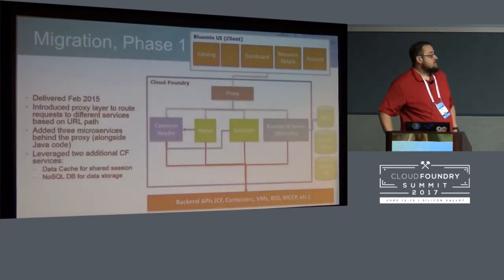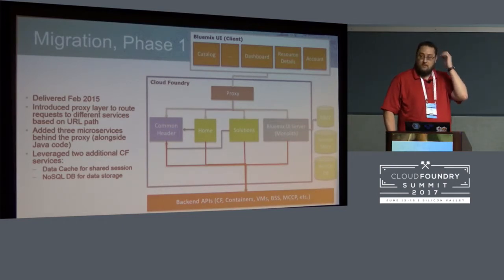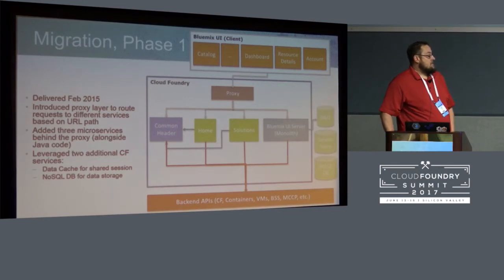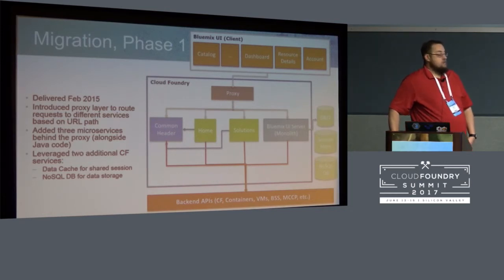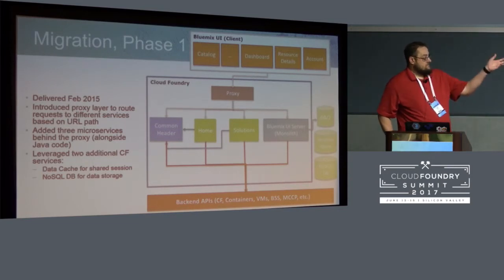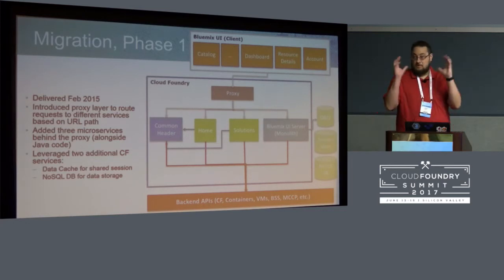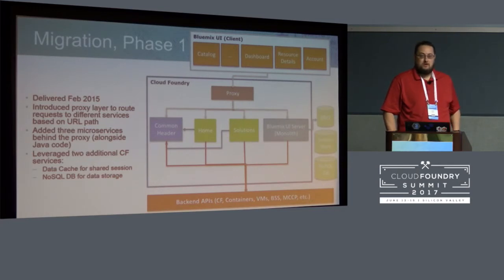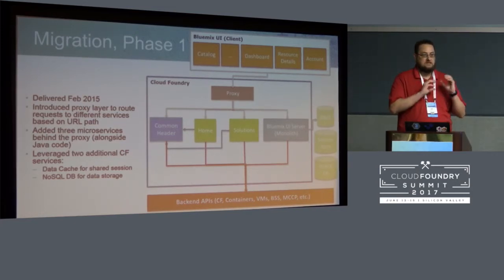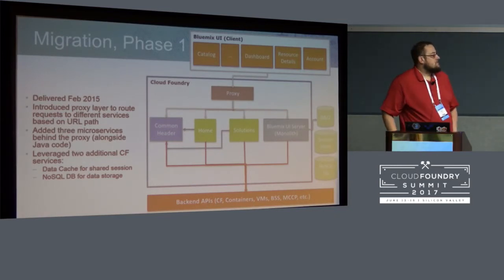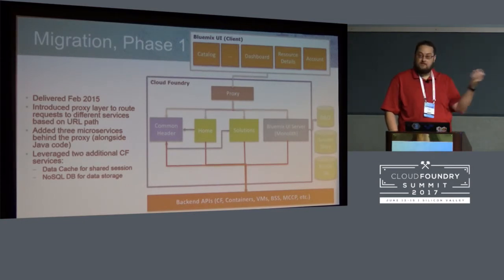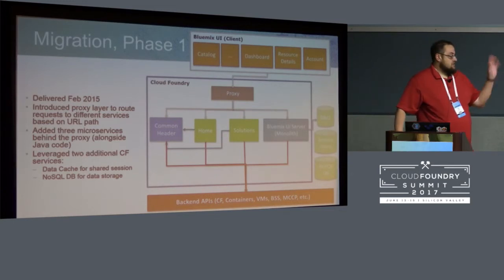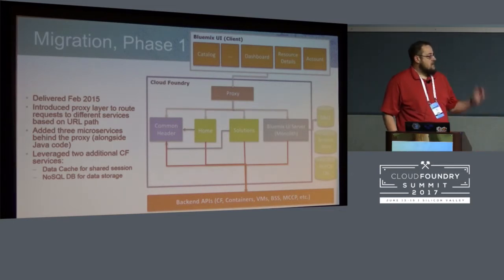Here's a picture of our first stage of the migration, as of about December 2015. We formally introduced the proxy layer and added three microservices alongside our Java monolith: the common header, a home microservice for the homepage, and a solutions microservice for some marketing material. We started trying to pick the simplest pieces to migrate as a proof of concept. We also introduced two additional Cloud Foundry services — a shared session store (using data cache back then, now Redis) and a NoSQL DB for data storage.